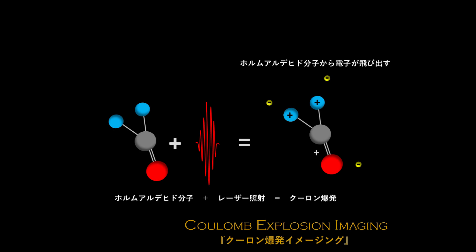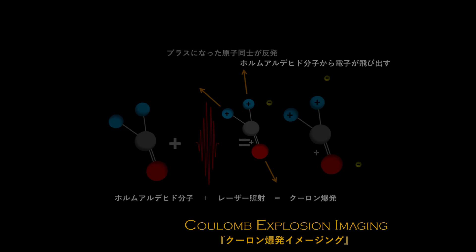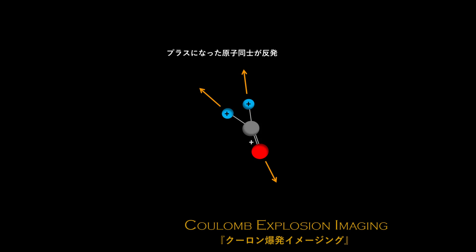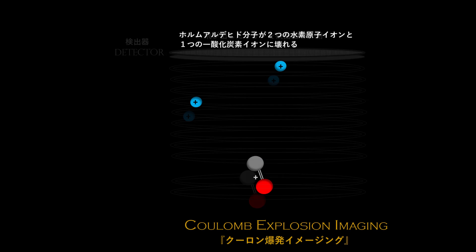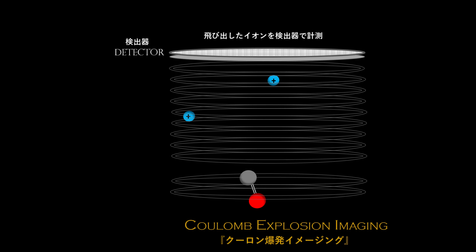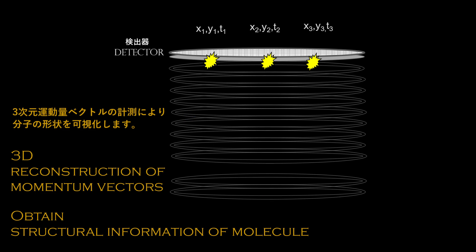An ultra-short laser pulse removes the electrons of the molecule. Positively charged ions fly apart and the molecule explodes. Fragments are captured on a detector in space and time for 3D reconstruction of momentum vectors to obtain structural information of our molecules.